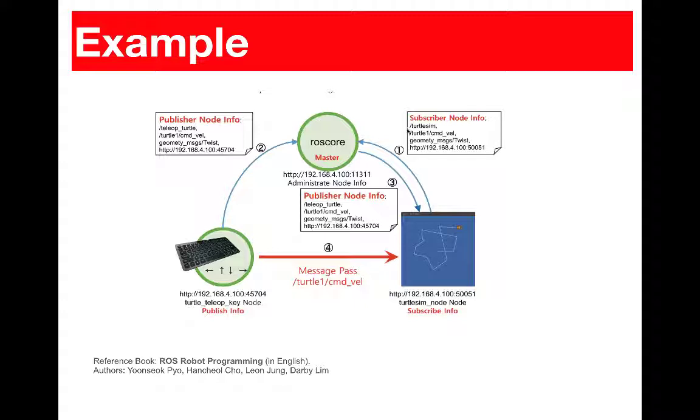So the first operation is that the TurtleSim node will send a request to declare itself into the master node. So it will tell him about the node. This is the name of the node TurtleSim. This is the name of the topic he will be waiting commands on. It's called TurtleOneCMDVal and the type of messages for this topic is the twist message and the twist message in ROS is used to send the linear speed and the angular speed of the robot.